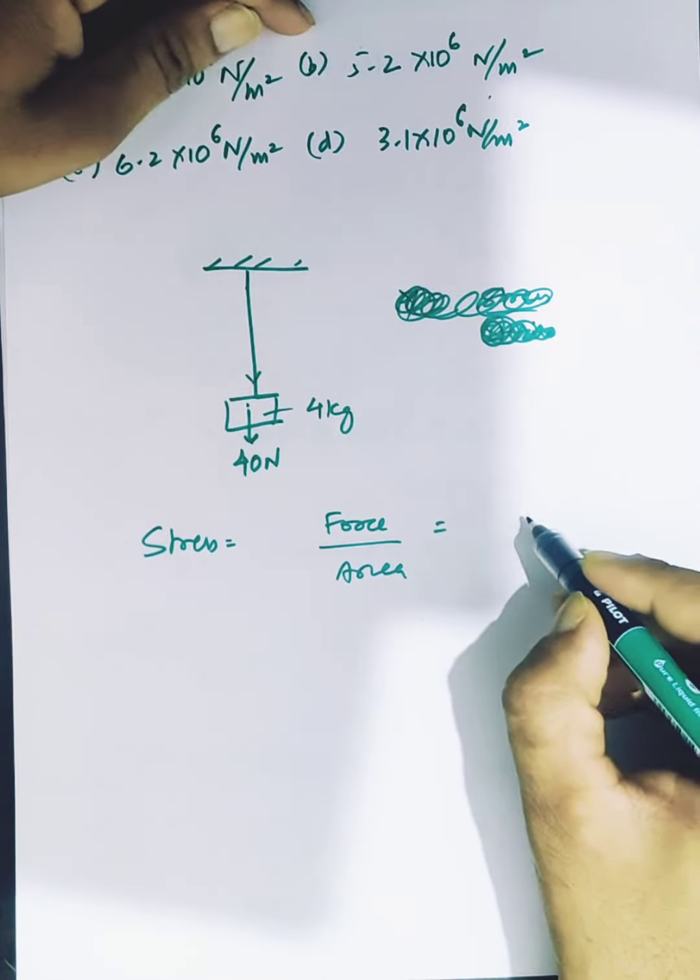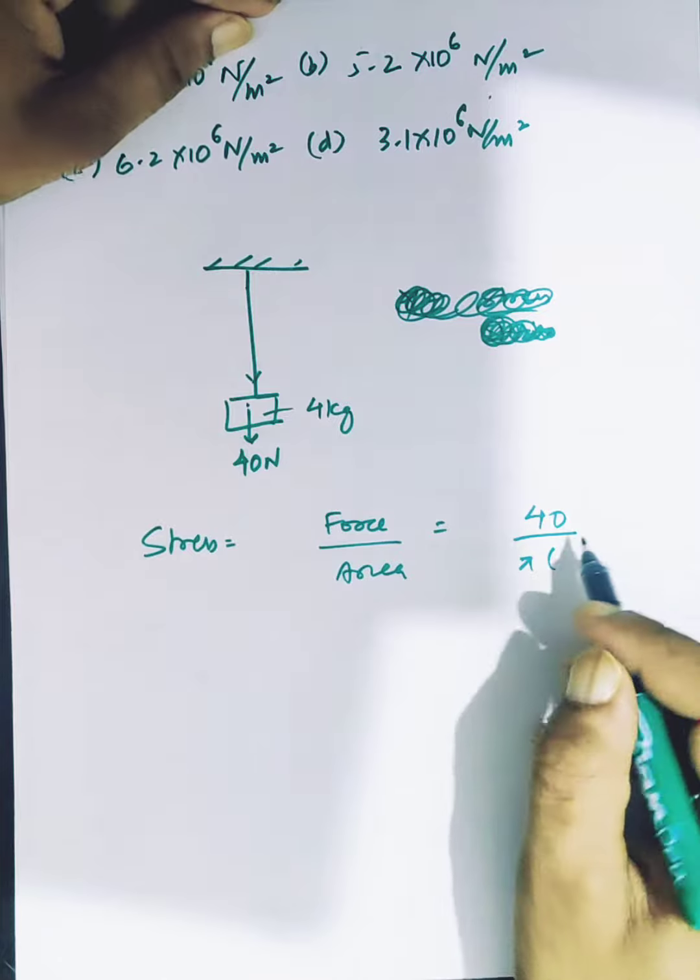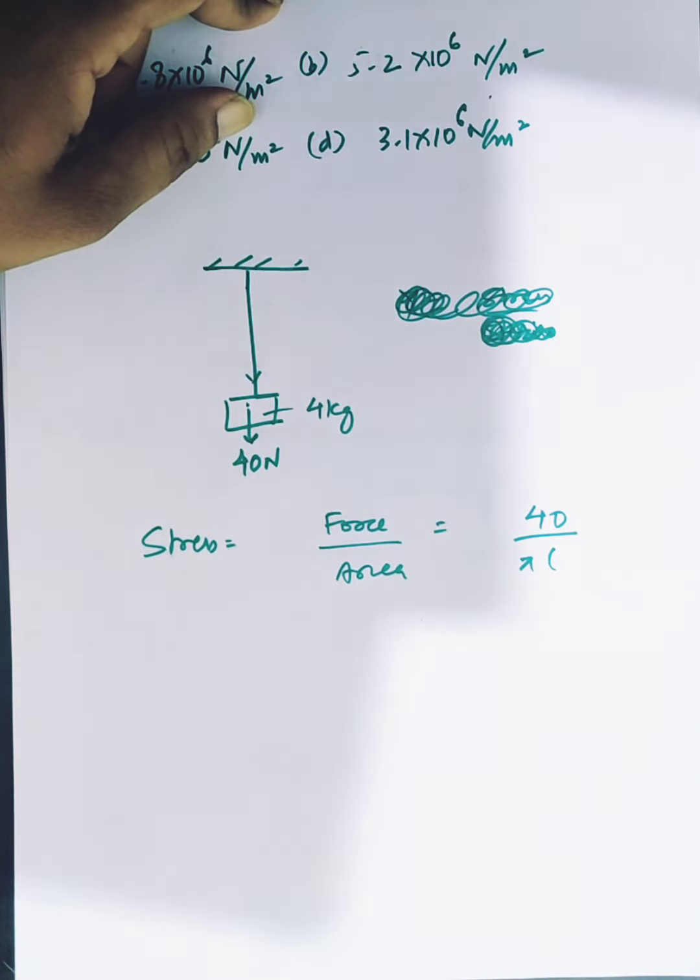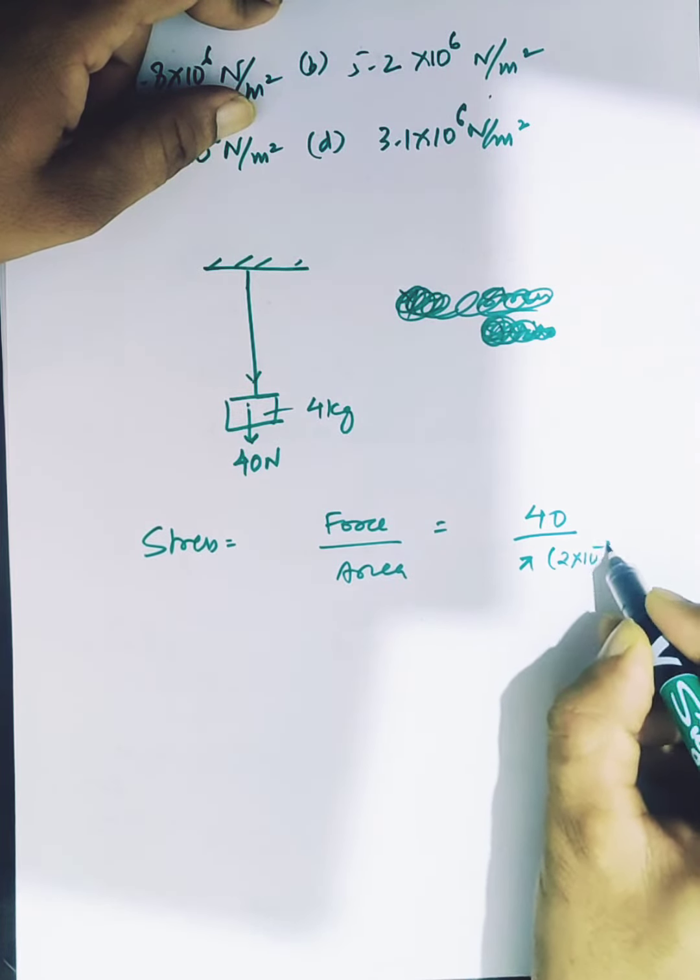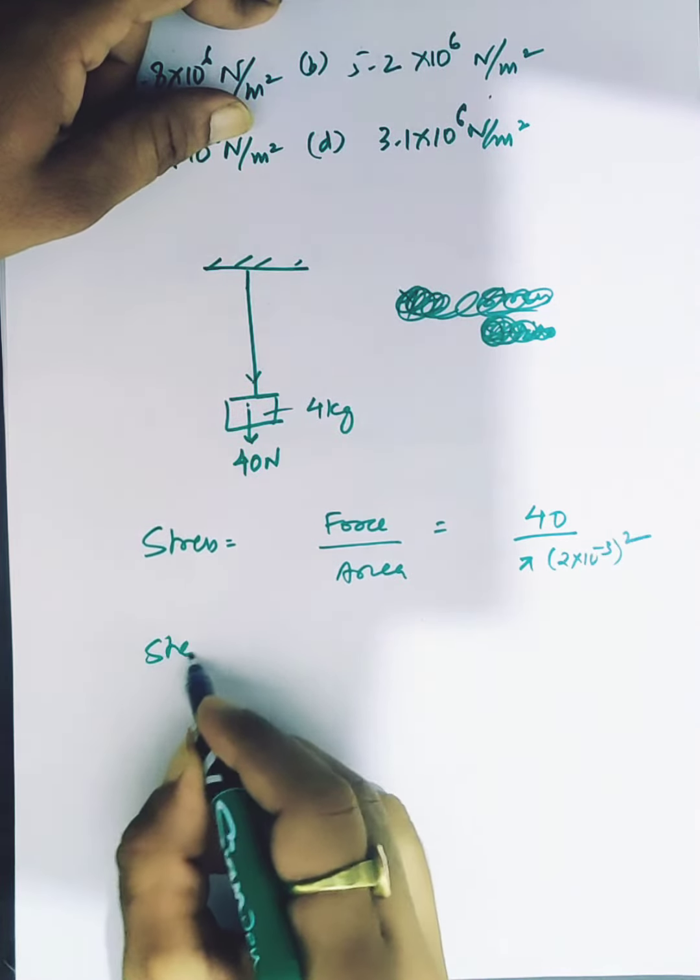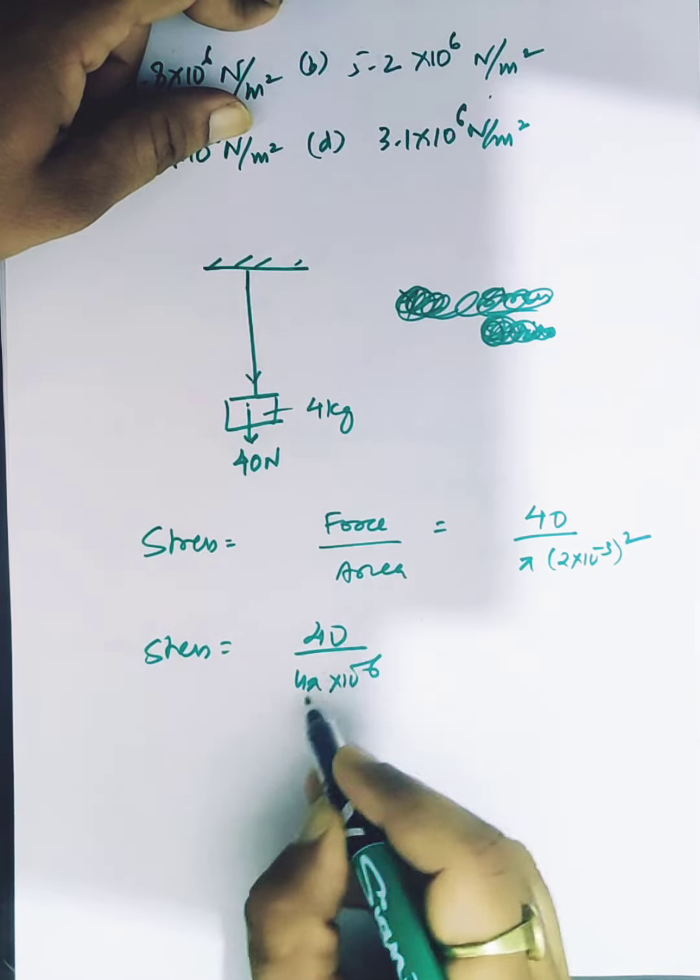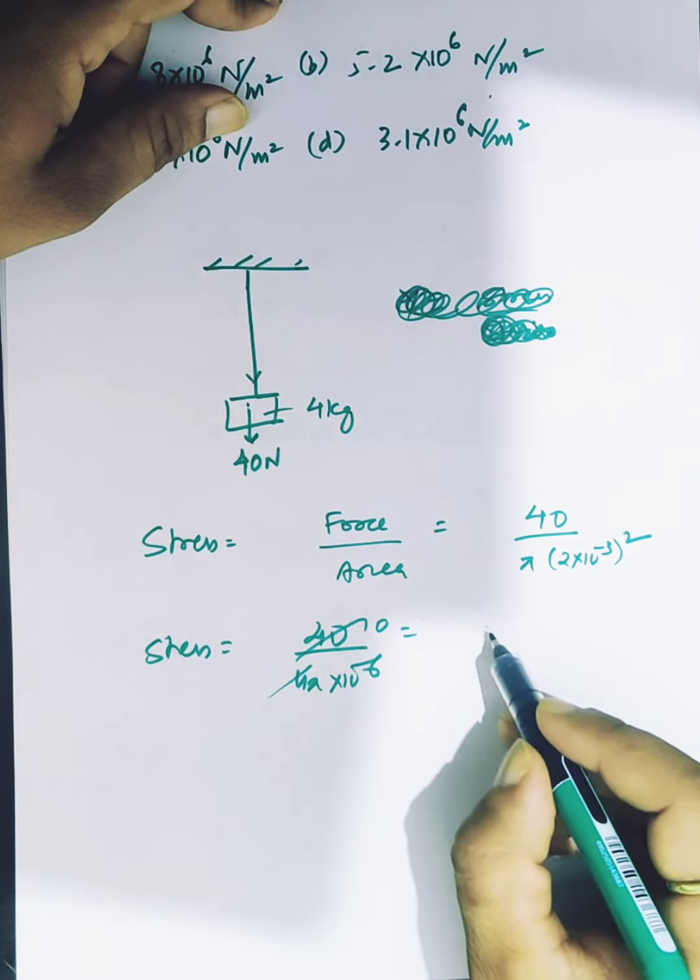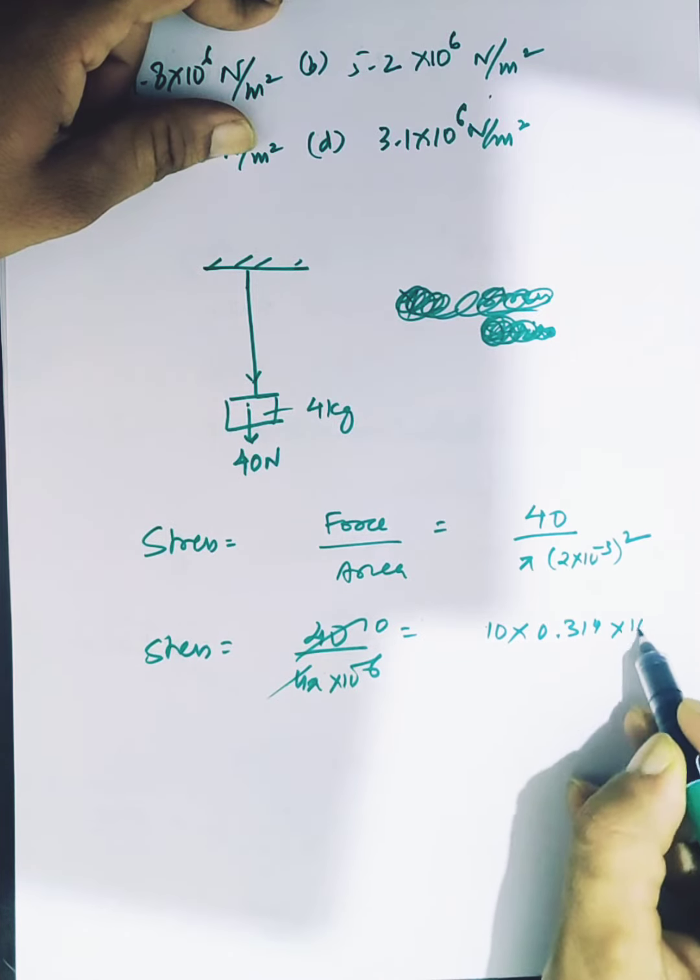The force is 40 newtons and the area is πr². So we have stress equals 40 upon 4π × 10^-6. So we have 10 upon π × 10^-6, which gives us 10 × 10^6 upon π. I'll just write it with π.